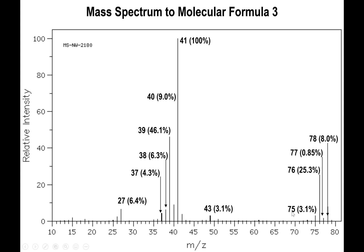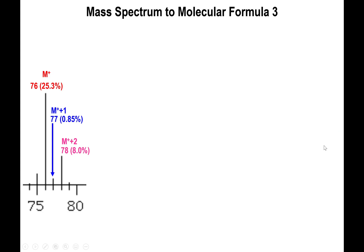The peak at 75 is a different fragment altogether — we don't pick 75 because it is lower in percentage than 76. So 76 is the M+ peak, 77 is the M+1 peak, and 78 is the M+2 peak. The percentages are 25.3%, 0.85%, and 8% respectively. We're going to zoom in on that region and start working with it.